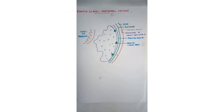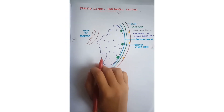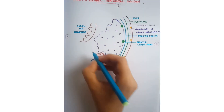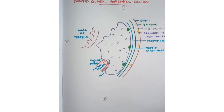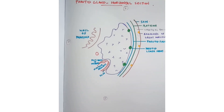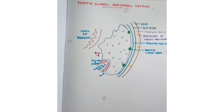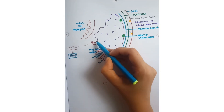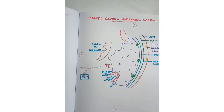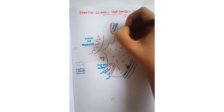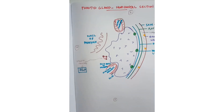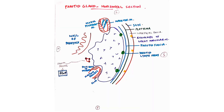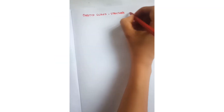On the posteromedial surface there are the mastoid process and styloid process. On the mastoid process: posterior belly of digastric and sternocleidomastoid. On the styloid process, remember HGP — stylohyoid, styloglossus, and stylopharyngeus. On the anteromedial surface there is the ramus of mandible, on which two muscles are present: medially the medial pterygoid muscle and laterally the masseter muscle.